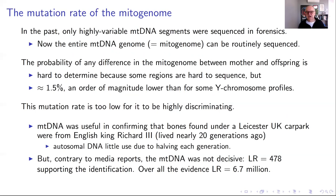That mutation rate is about an order of magnitude lower than for the latest generation of Y chromosome profiles, which have mutation rates up towards 15%. So this mutation rate is on the one hand very high compared to the rest of the genome, but it's too low for mtDNA on its own to be highly discriminating.